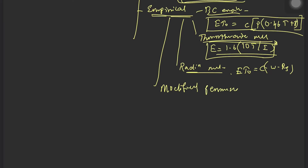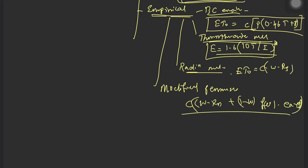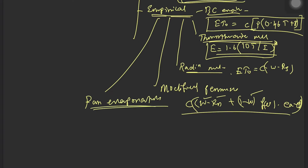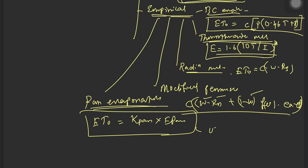The modified Penman method is: ET₀ = c × W × Rn + (1 − W) × f(u) × (ea − ed). This method is mostly used because it incorporates many parameters and is more accurate. Another method, the simplest one, is pan evaporation: ET₀ = Kpan × Epan.